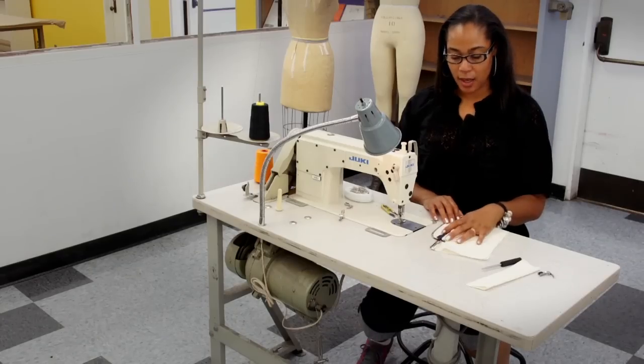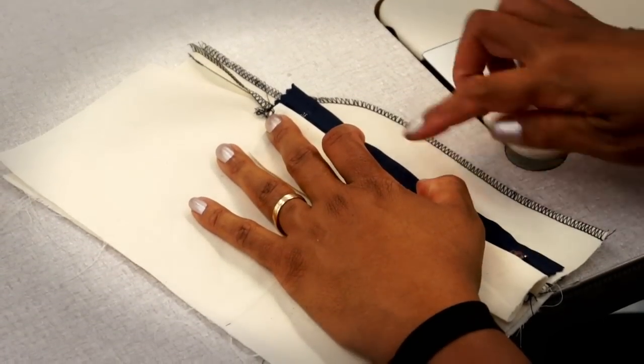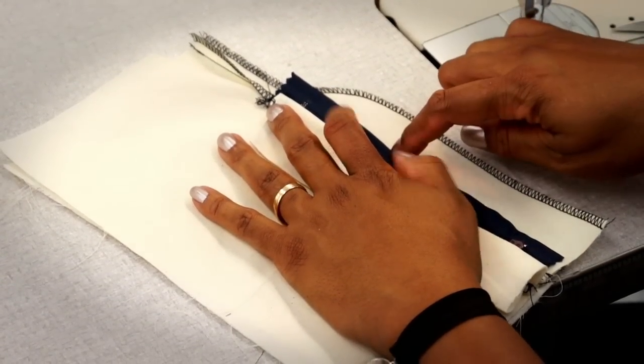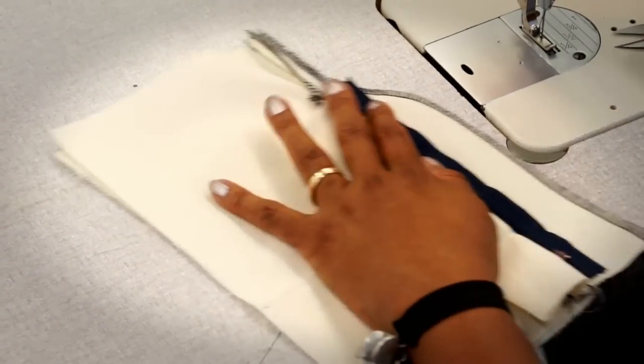Once we're at the machine, I'm going to set this up so that I'm only sewing the facing and the zipper. The shield has been moved out of the way.